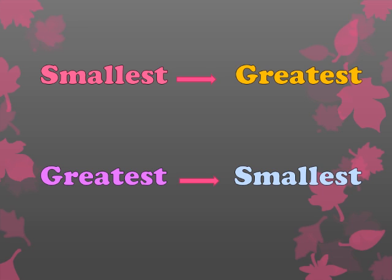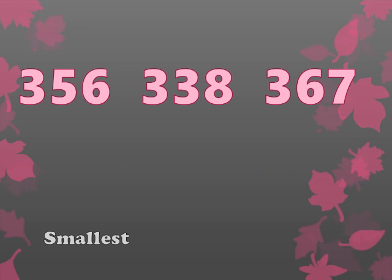Now let's take an example. Here we have three three-digit numbers and we have to arrange them beginning with the smallest. The first step is to compare the number in the hundreds place. In the first number the hundreds digit is three, in the second it's three again, and in the third it's also three. Since the hundreds digits are the same, we move to step two: compare the number in the tens place.